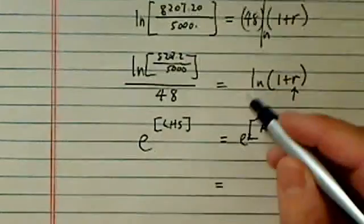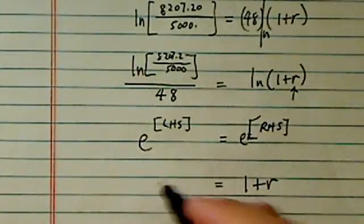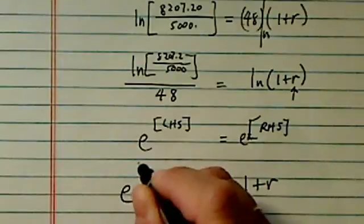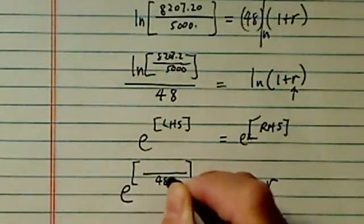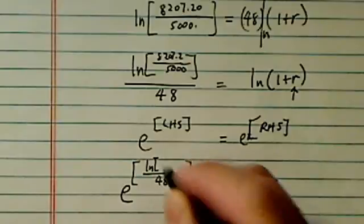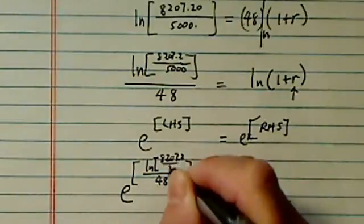Now on this side, when you raise to the exponential on this one, you have a 1 plus R on this side. And then we're going to write e to this big, long, messy, but it's exact form.